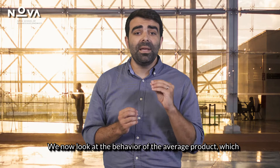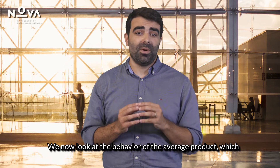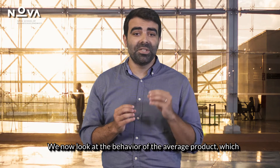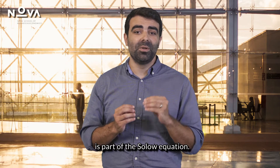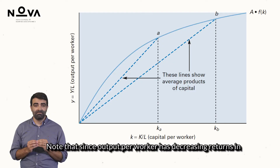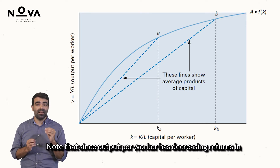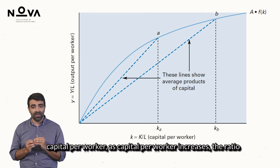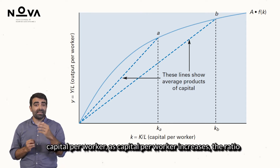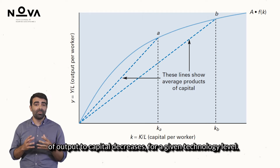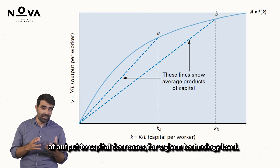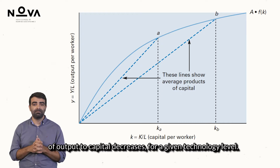We now look at the behavior of the average product, which is part of the Solow equation. Note that since output per worker has decreasing returns in capital per worker, as capital per worker increases, the ratio of output to capital decreases for a given technology level.